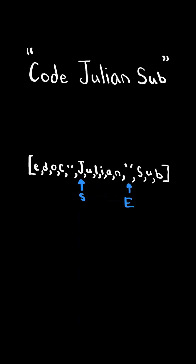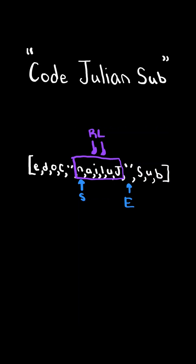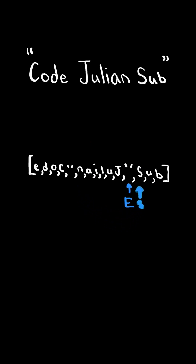Again, when the end pointer reaches a space character, we have found a word that we need to reverse. So we will have a left pointer at start and a right pointer at end minus 1, and we will begin swapping the values at the left and right pointers. When left and right cross each other, we have finished reversing the word, and we set the start pointer equal to end plus 1 and continue iterating through the list using the end pointer.